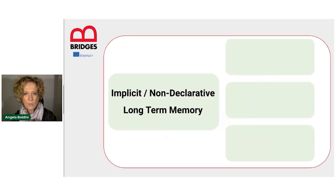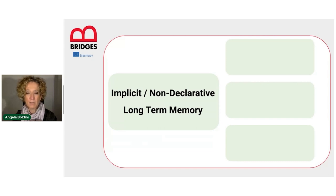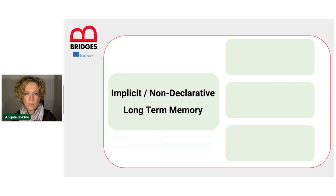Let's now move on to implicit or non-declarative memory. As I said earlier, we talk about implicit memory when there is no awareness of the fact that we are retrieving information from memory — when we have a sort of automatic recall.